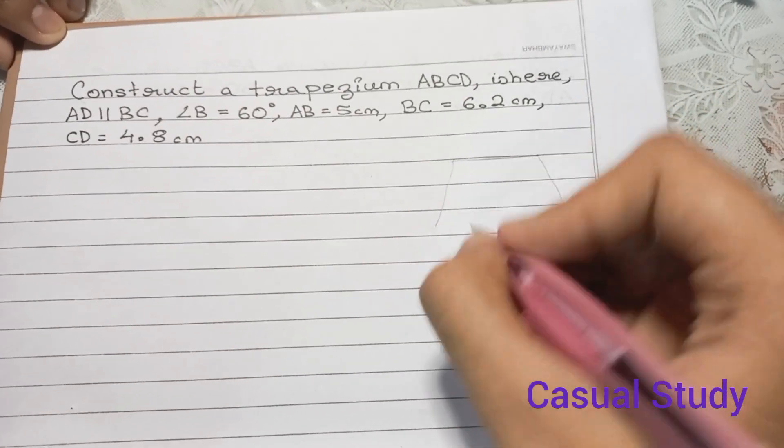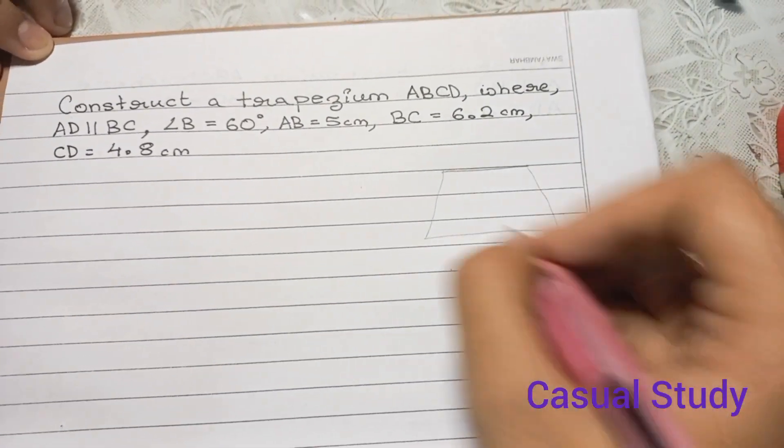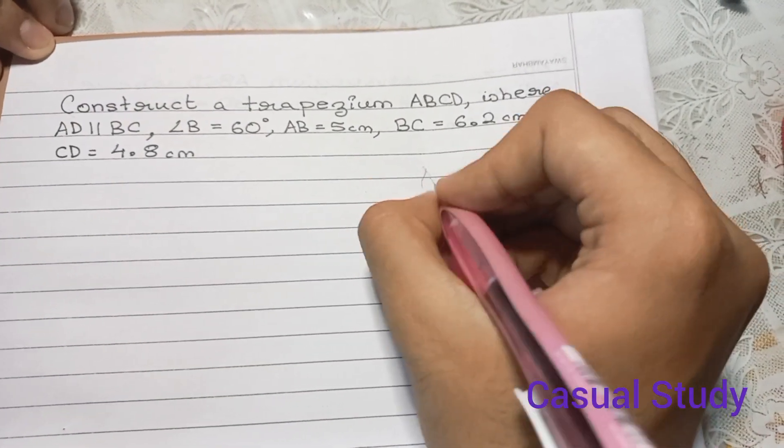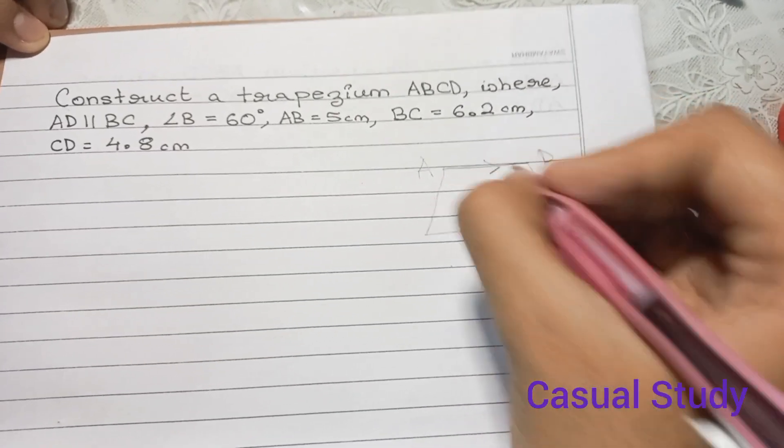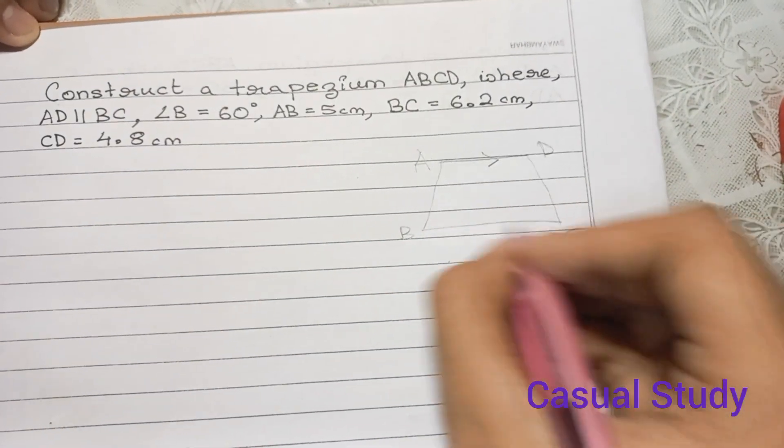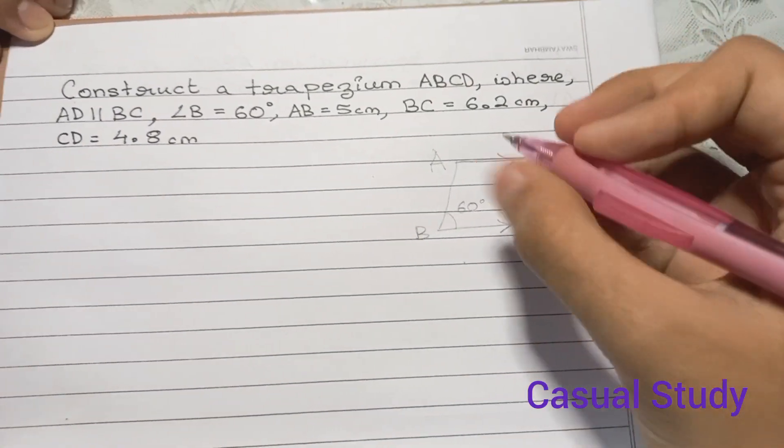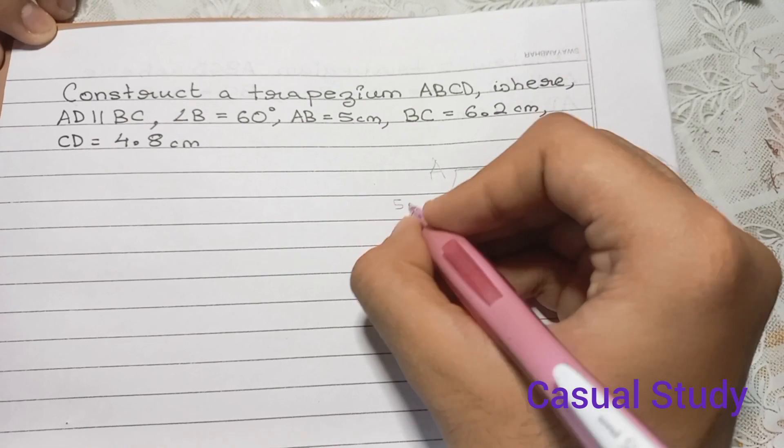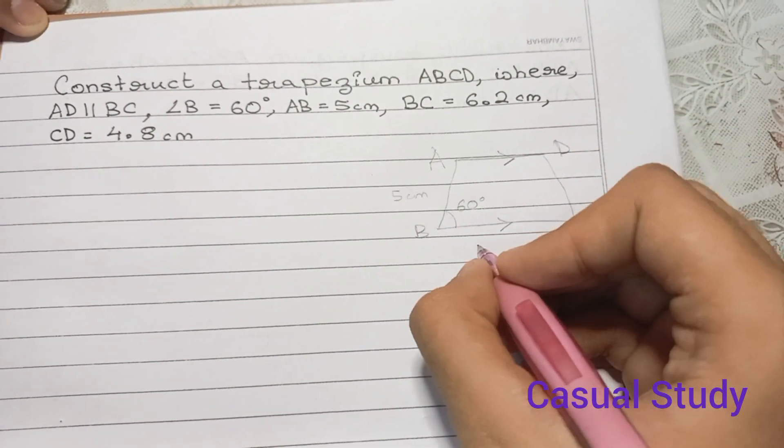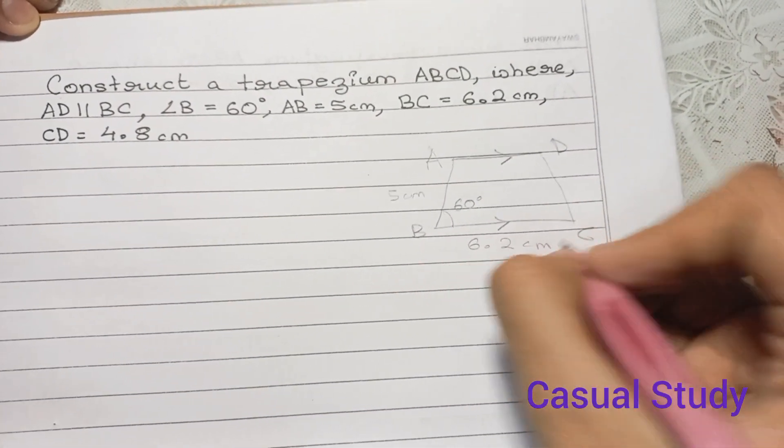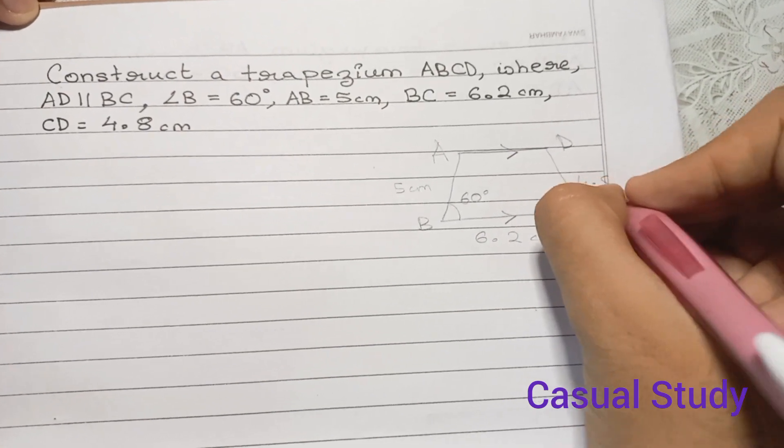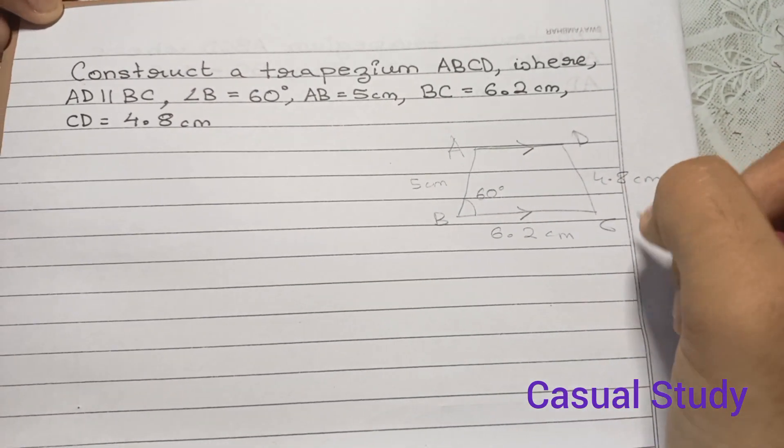So this is a trapezium where AD is parallel to BC. Now angle B is equal to 60 degrees and AB equals 5 cm, BC equals 6.2 cm, and CD equals 4.8 cm. Now how to do this?